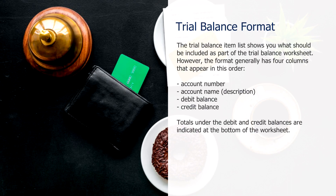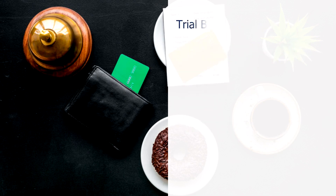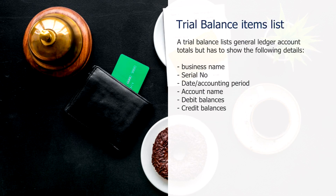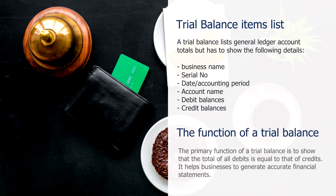Trial balance format: the trial balance item list shows you what should be included as part of the trial balance worksheet. However, the format generally has four columns that appear in this order: account number, account name or description, debit balance, and credit balance. A trial balance lists general ledger account totals but has to show the following details: business name, serial number, date or accounting period, account name, debit balances, and credit balances.